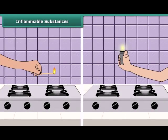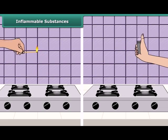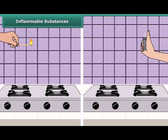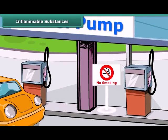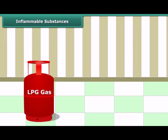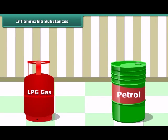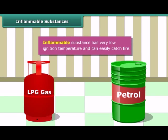Your mother would have told you to keep a burning matchstick or lighter away from the LPG gas stove in the kitchen, because LPG catches fire very easily. Similarly, you must have seen no smoking signs at petrol pumps, because petrol also catches fire very easily. Substances like LPG and petrol are inflammable because they have a low ignition temperature, due to which they readily catch fire.